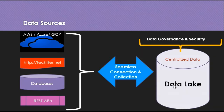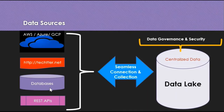Once you have decided to transform your organization into an AI-enabled enterprise, you need to collect data from different locations — from your products, your websites, and so on. Your data might be lying on the cloud, on-premises, from your website, remote databases, local databases, or from REST APIs.